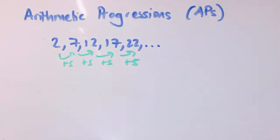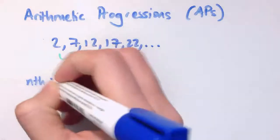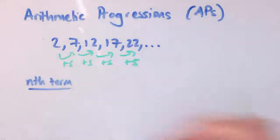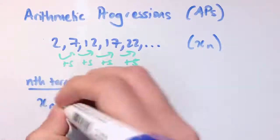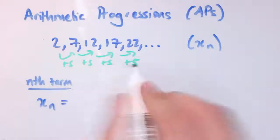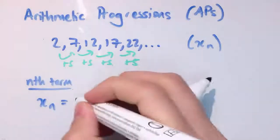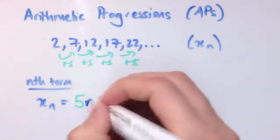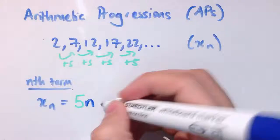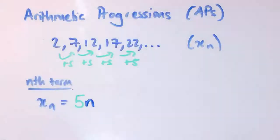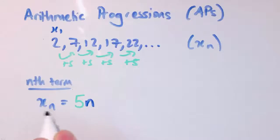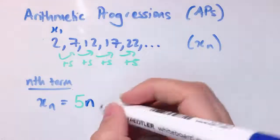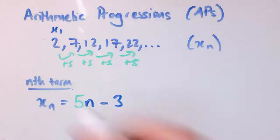To write down the nth term definition of an arithmetic progression, let's call this sequence x, so x_n. The amount it goes up — the 5 — is going to appear with n, so it's 5n, plus or minus something to make the sequence work. If I put n equals 1, I need to get x_1 which is 2. At the moment 5 times 1 is 5, so I need to subtract 3, and that makes 2.